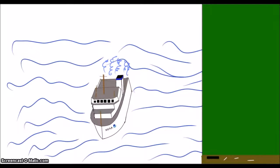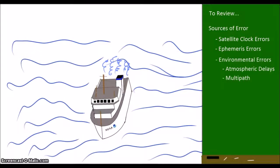Last time, we talked about how GPS works and where the major sources of error are in the system. To review, those major errors are satellite clock errors, ephemeris errors, and environmental errors, including atmospheric delays and multipath. Today, we are going to look at how to deal with these errors.